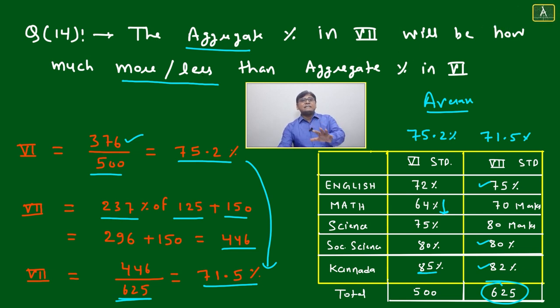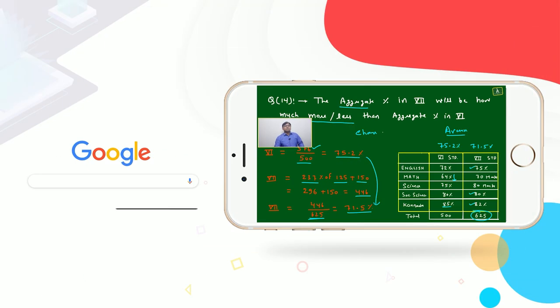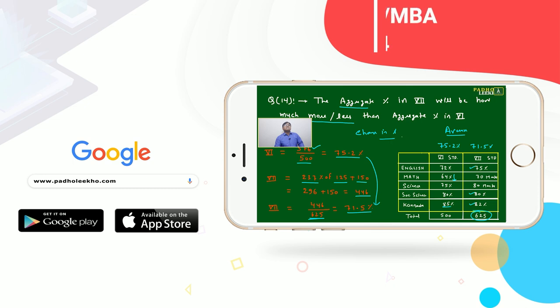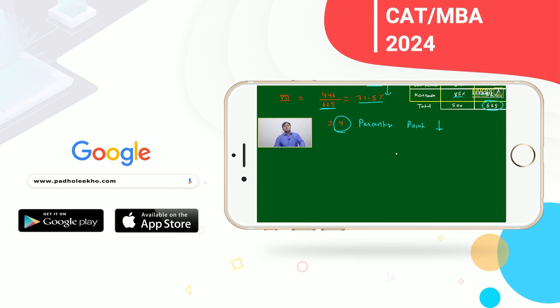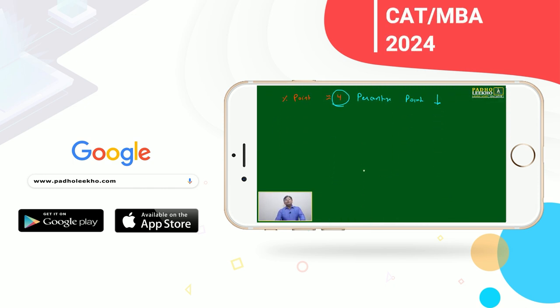The aggregate percentage in seventh will be how much more or less than aggregate percentage in sixth? They're not asking for percentage change. When they say how much more or less, we just find the change in percentage, expressed in terms of percentage points. From sixth to seventh, there's a loss of four percentage points.